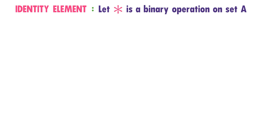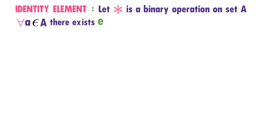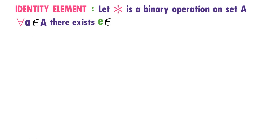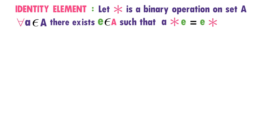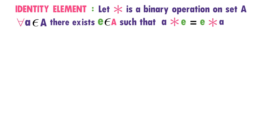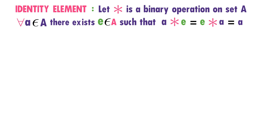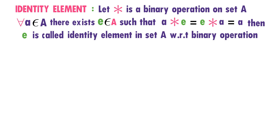Let star be a binary operation on set A. For any element A belonging to set A, there exists E in set A such that A star E equals E star A equals A. Then E is called the identity element in set A with respect to binary operation star.